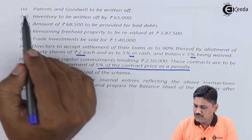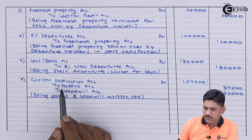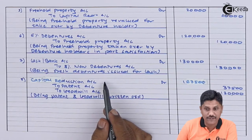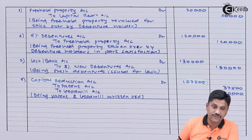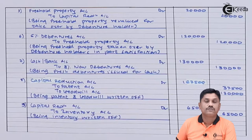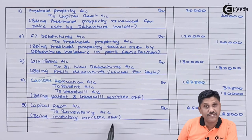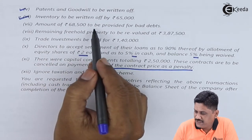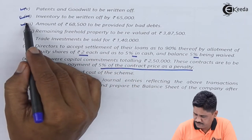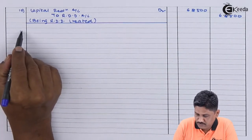Journal Entry 8: Patent and goodwill are written off — both are assets being eliminated. Entry: Capital Reduction Account debit to Patent Account and to Goodwill Account. These are losses to the company, so debited to Capital Reduction. Entry 9: Inventory written off by Rs.65,000. Entry: Capital Reduction Account debit to Inventory Account Rs.65,000. Entry 10: RDD of Rs.68,500 to be created. Entry: Capital Reduction Account debit to RDD Account Rs.68,500.